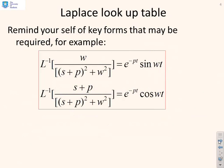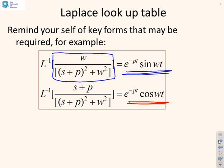Next, we remind ourselves of the oscillatory Laplace transform forms we need. First, e^(−pt) sin(ωt) has the Laplace transform ω / [(s+p)² + ω²]. Alternatively, e^(−pt) cos(ωt) has the Laplace transform (s+p) / [(s+p)² + ω²]. Those are the two forms we need.